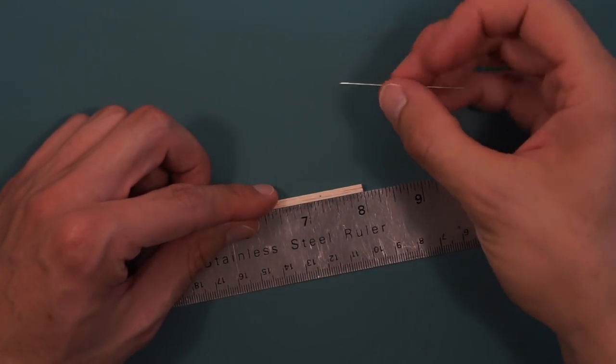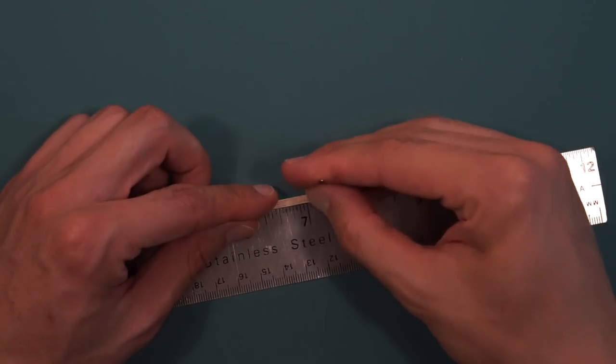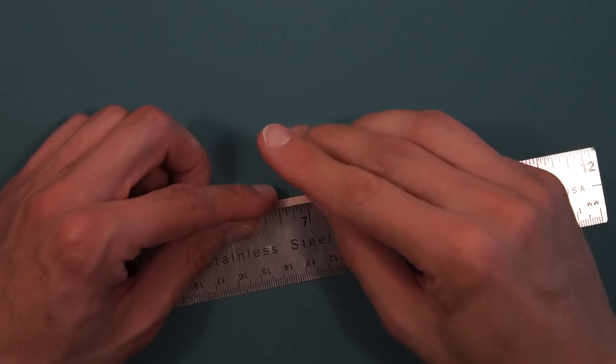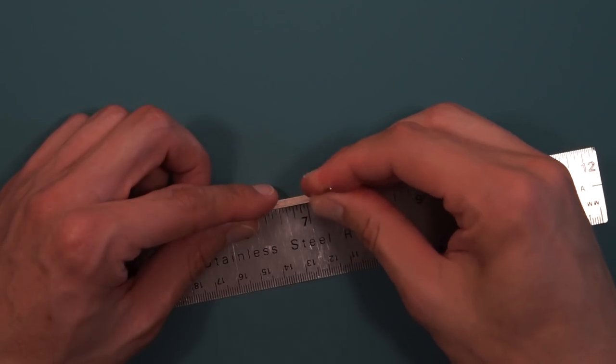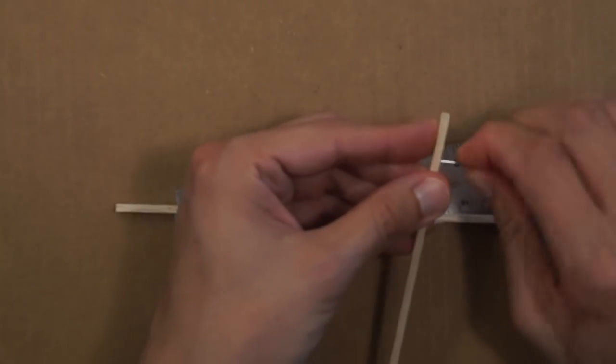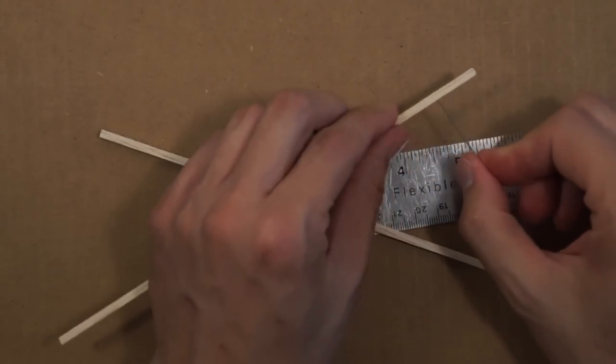Then you can use the sharp end of the wire that you cut to drill the hole further. This takes a little while. Obviously it would be easier if you have a 1/32nd inch drill to get the job done a lot quicker. Eventually you'll get the hole to go all the way through.